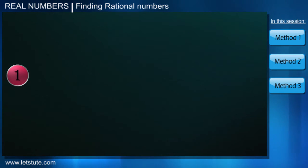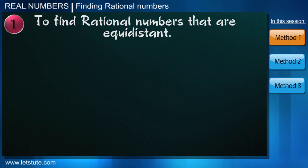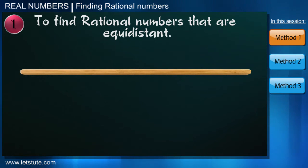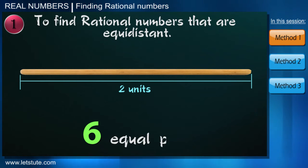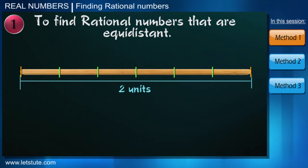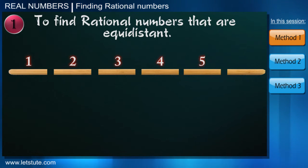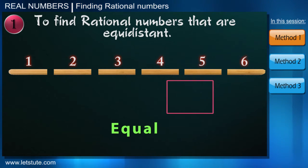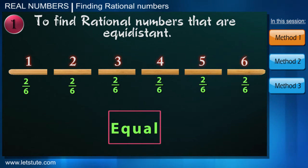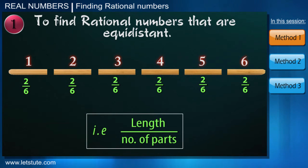Let's start with the first one where we'll find rational numbers that are equidistant. And for that, let's first suppose we have a stick whose length is two units and we have to cut this into six equal parts. So how can we do that? We'll simply mark it five places and cut it to get six parts. But what will be the length of each part? Each part will be equal and it will be 2 upon 6, that is the length upon the number of parts.